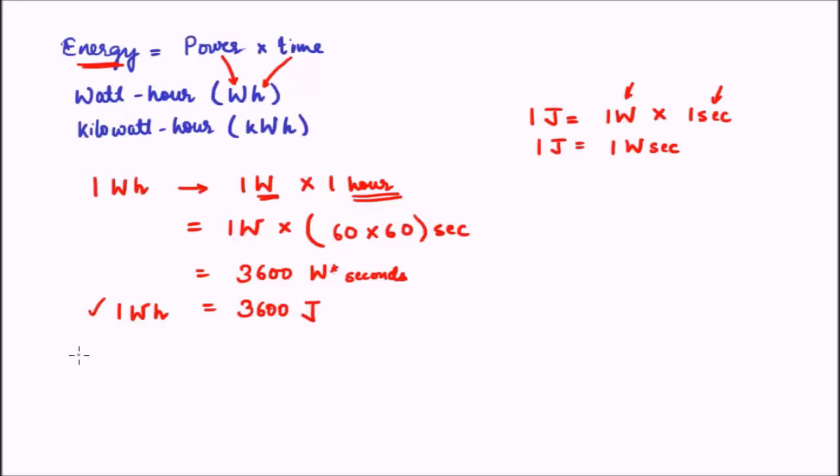Now, what will be one kilowatt-hour? One kilowatt-hour is 1000 watt-hour, the kilo. So 1000 and we have already calculated that one watt-hour is 3600 joule. So I can write this as 3.6 times 10 to the power 3 joule. If I replace this here, then what I get is 10 to the power 3 multiplied by 3.6 times 10 to the power 3 and that turns out to be 3.6 into 10 to the power 6 joule.